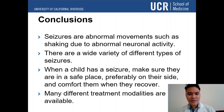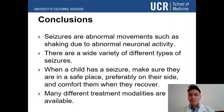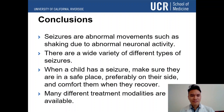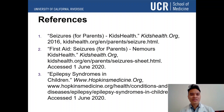To wrap it up: seizures are abnormal movements such as shaking due to abnormal neuronal activity. There are a wide variety of different types of seizures. When a child has a seizure, make sure they are in a safe place, preferably on their side, and comfort them when they recover. If they have status epilepticus, call 911. There are many treatment modalities available, but you must always weigh whether the risk of toxicities and side effects is worth it. Thank you so much — I hope you learned from this presentation.